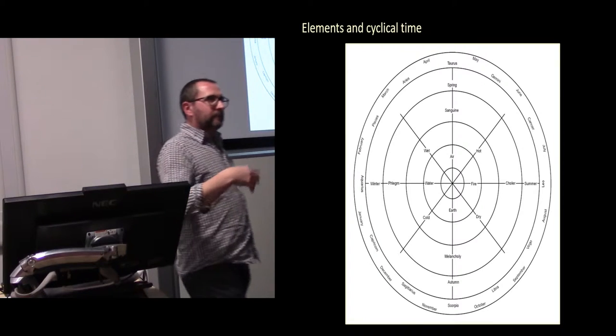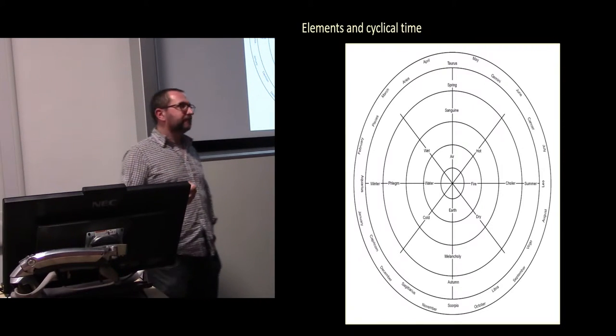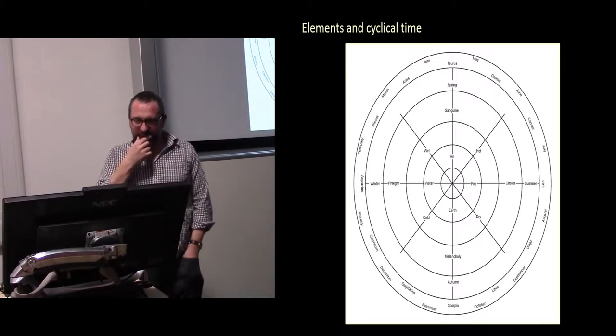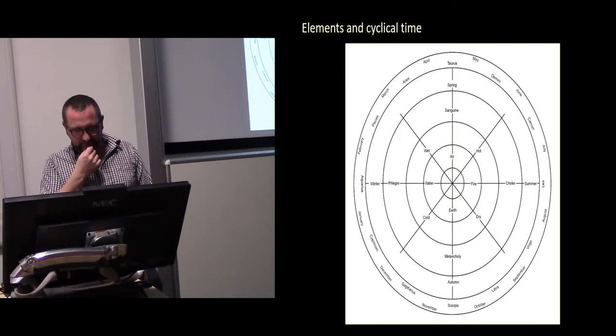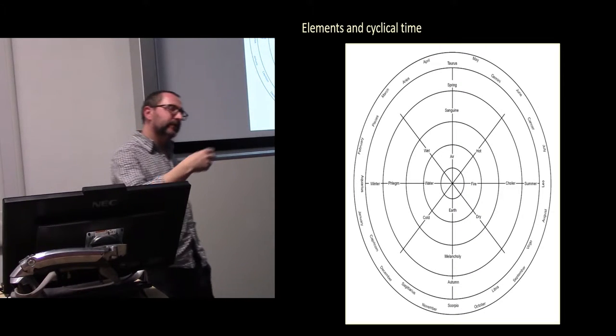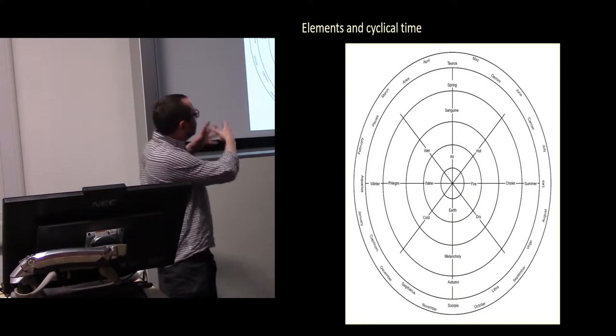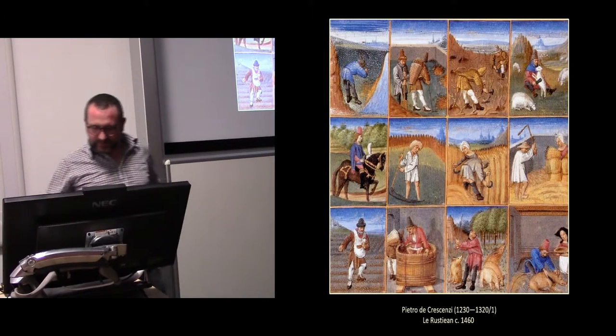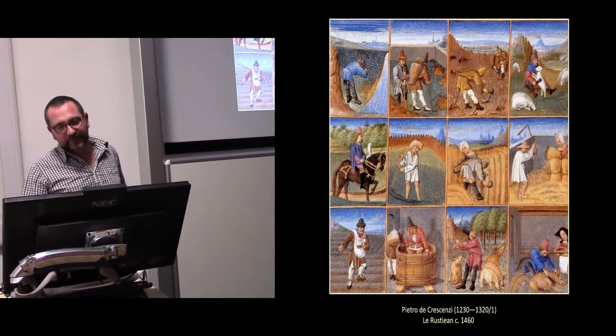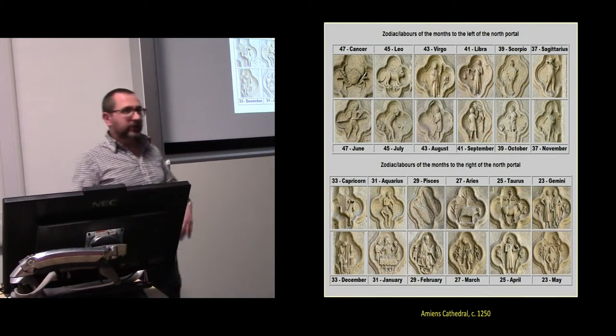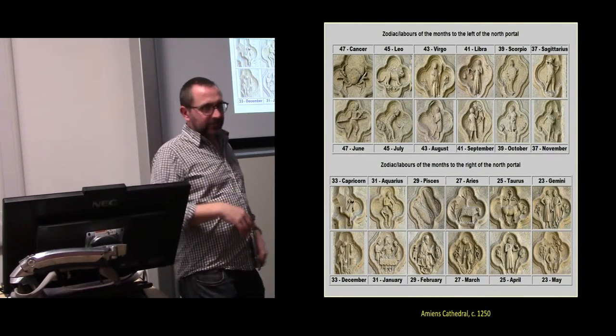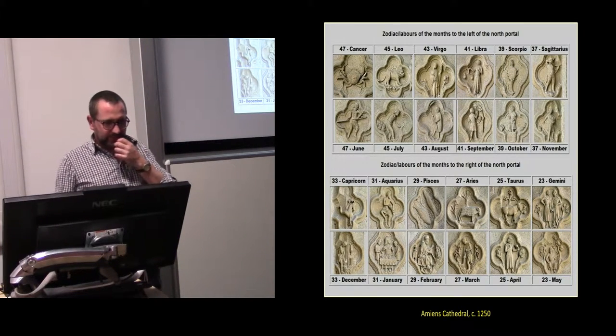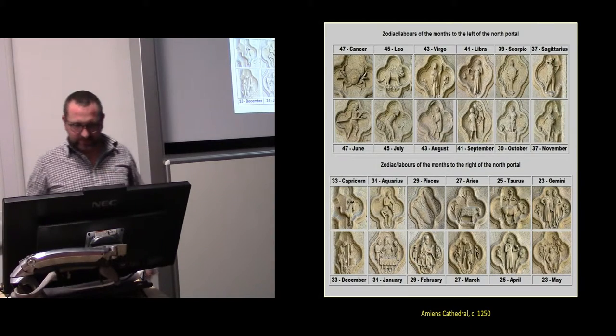The elements map onto time. So there are qualities, the planets themselves have elemental qualities, which gets us to the seasons and to the zodiac and to the movement of the months, which map very easily onto the elemental wheel. And so connect us back to labor of the months, for example, or here at Amiens Cathedral, these wonderful images, personifications of both the labors, the zodiac, and so on.